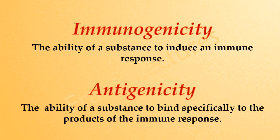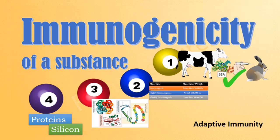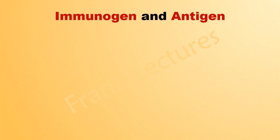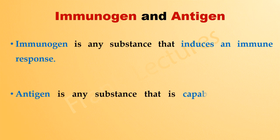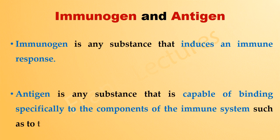In the last video lecture we covered the terms immunogenicity and antigenicity. Today we will talk about the properties which determine the immunogenicity of a substance. But before that, let's clear any doubt regarding the terms immunogen and antigen. An immunogen is any substance that induces an immune response, and an antigen is any substance that is capable of binding specifically to the components of the immune system, such as antibodies. Nowadays the terms antigen and immunogen are used interchangeably by immunologists.